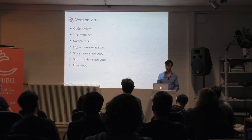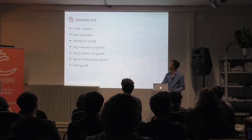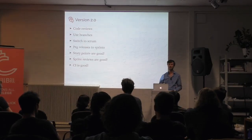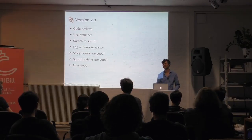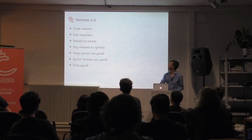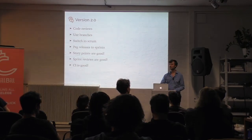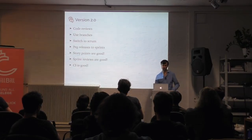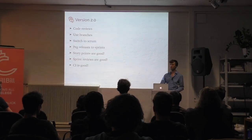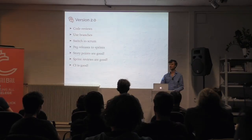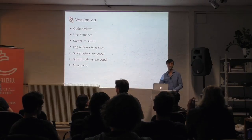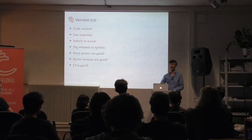What we learned for version 2.0: code reviews are good, use branches. We switched to Scrum — we use a variation of it. We use two-week increments now, and it's helped us really understand the scope of features a lot better. We mostly peg releases to sprints. We like story points. Sprint reviews have been really good — taking that hour every two weeks to talk about what's worked well and what didn't has helped us get a lot more organized. And we also started doing CI, which was also good.